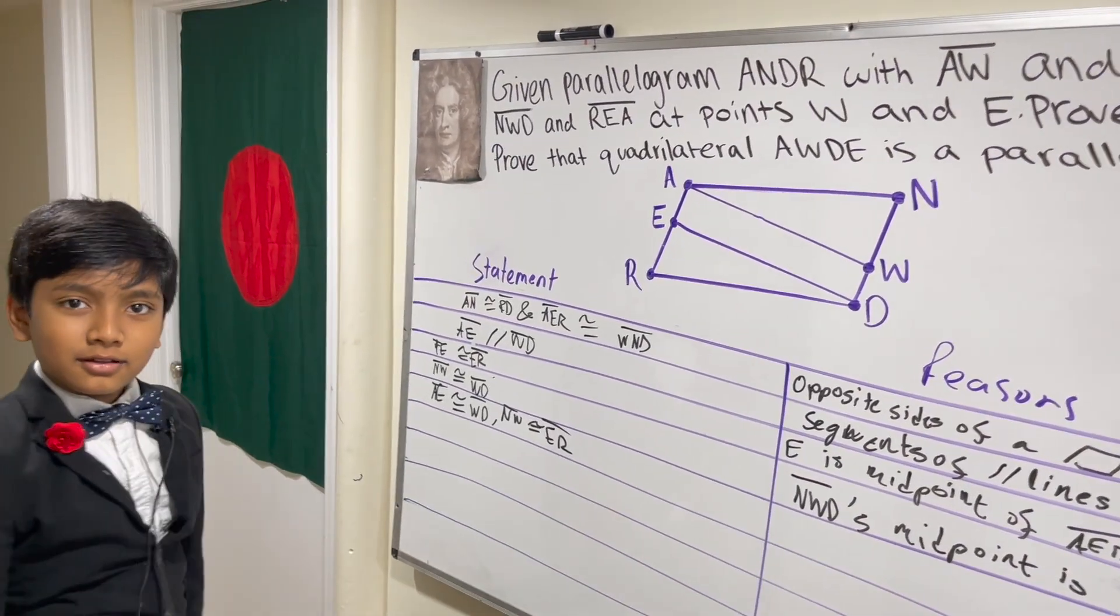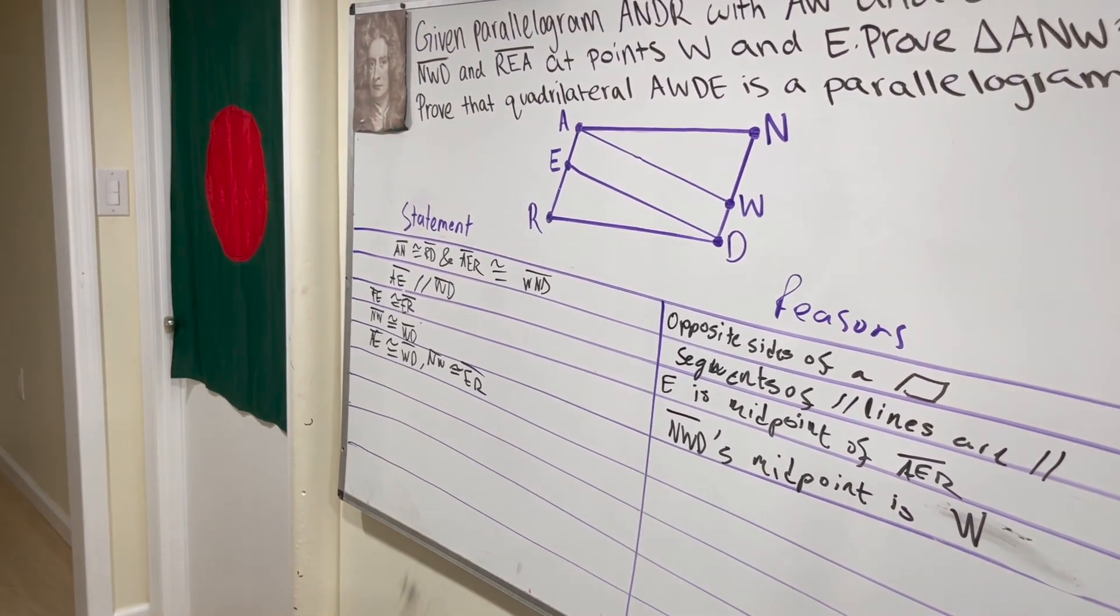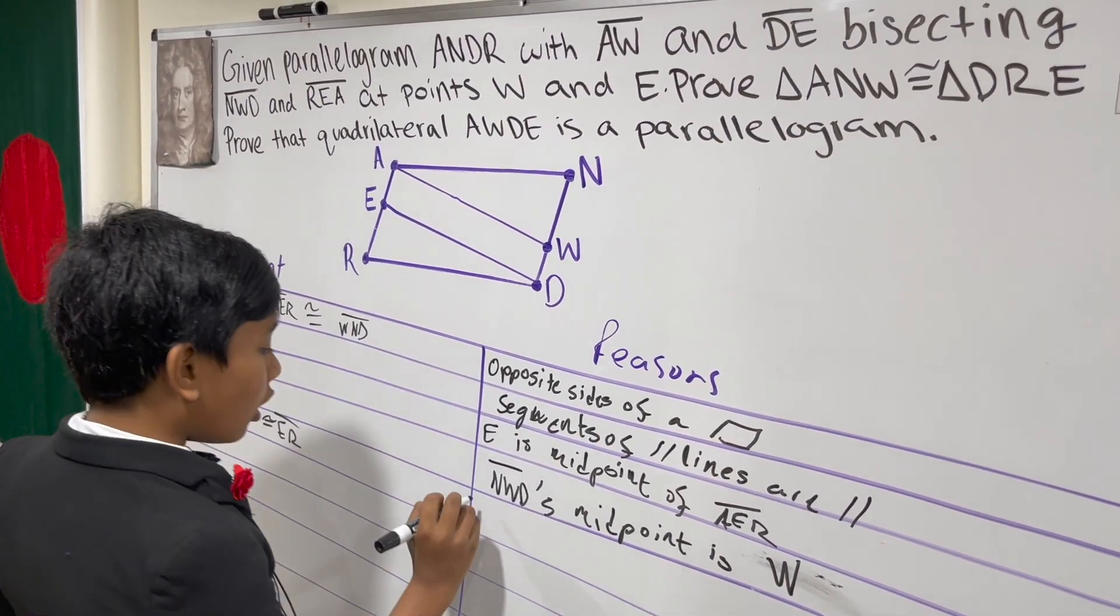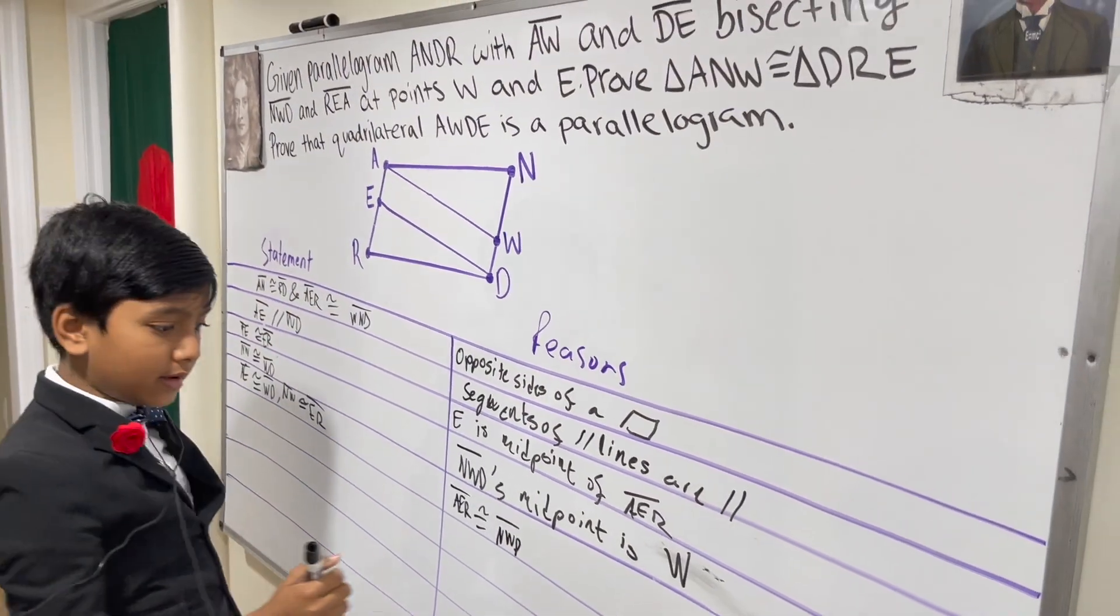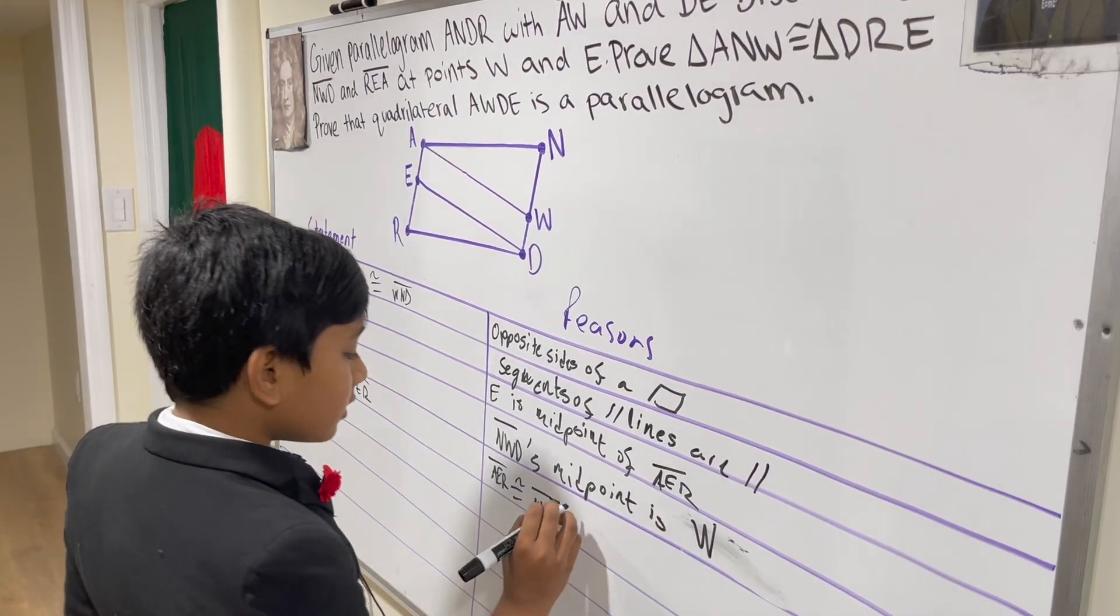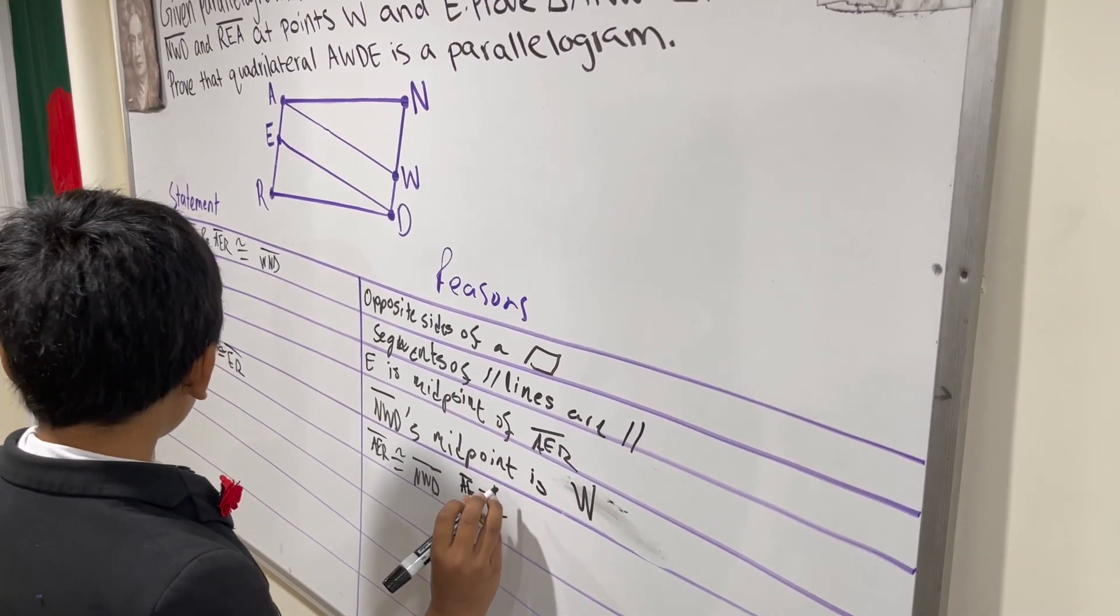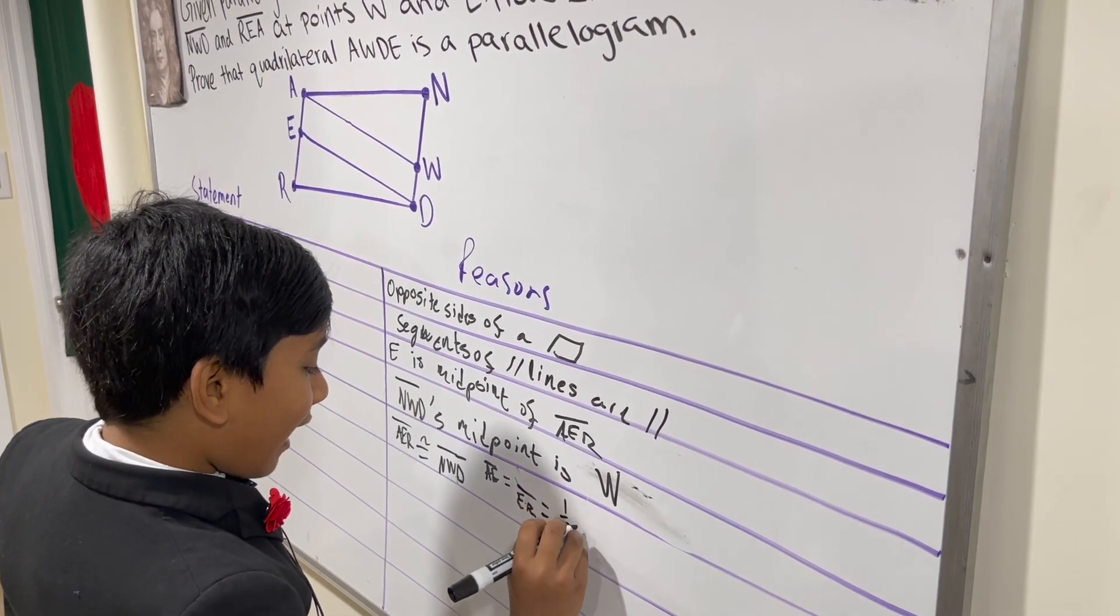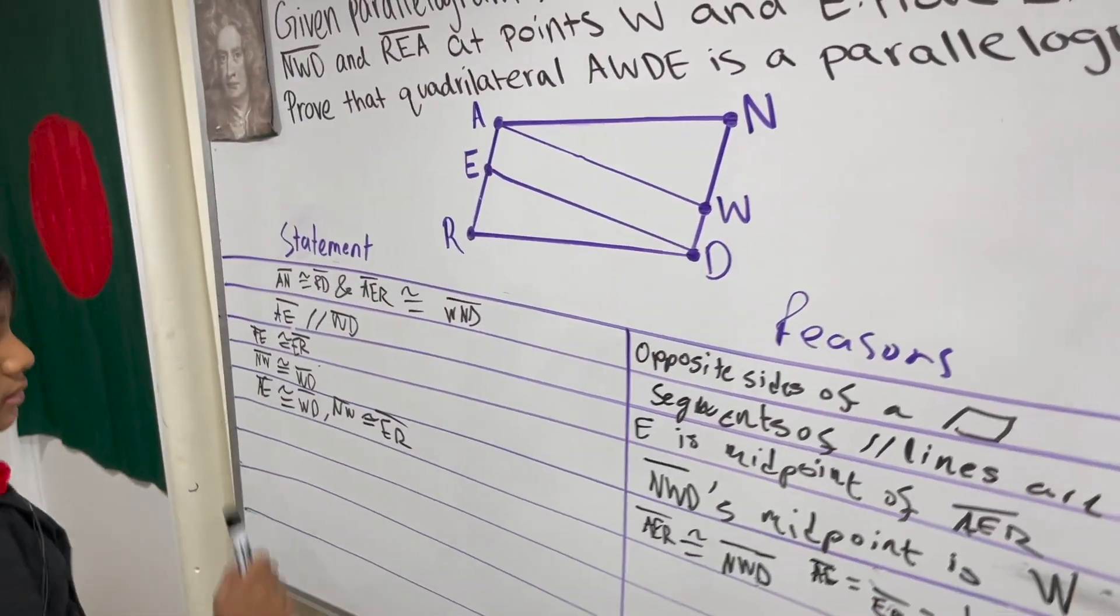I know that reason. No, I mean fine, fine, say it. Actually, I don't know. Okay, thank god. Alright, so this is because AER is congruent to NWD. You already know that because they're opposite sides of a parallelogram. So AER and NWD are congruent, and AE and ER are essentially equal to half AER. But half AER, you see, is equal to half NWD.